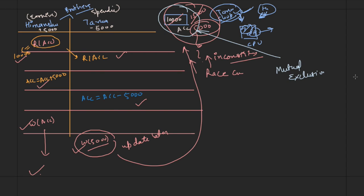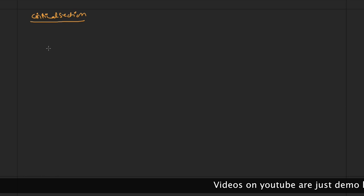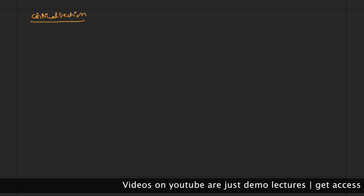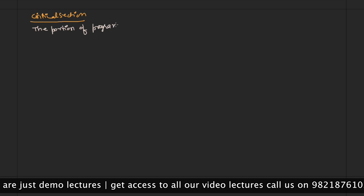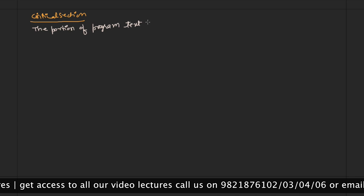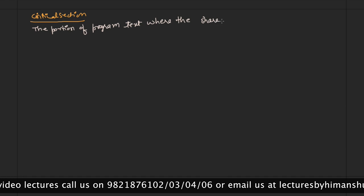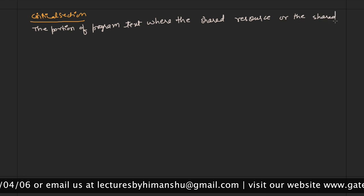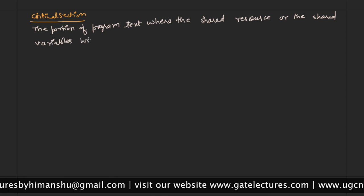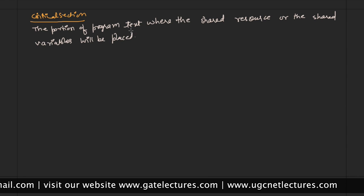This is the basic need for synchronization. Now let us introduce some basic terminologies. Number one: what is a critical section? A critical section is the portion of the program text where the shared resource or the shared variables are placed.